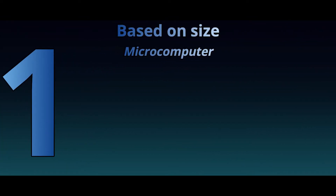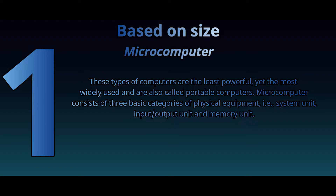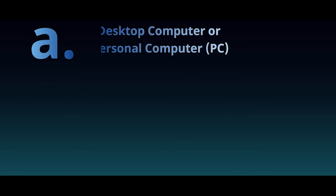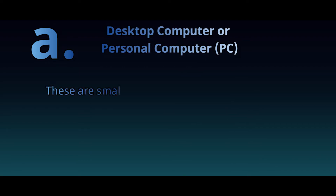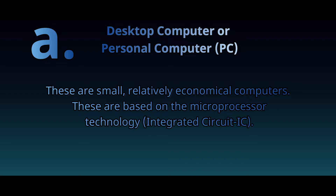Based on size, computers are categorized as follows. Microcomputer: These types of computers are the least powerful, yet the most widely used, and are also called portable computers. A microcomputer consists of three basic categories of physical equipment: system unit, input-output unit, and memory unit. Some types of microcomputers include: 1. Desktop computer or personal computer — these are small, relatively economical computers based on microprocessor technology.